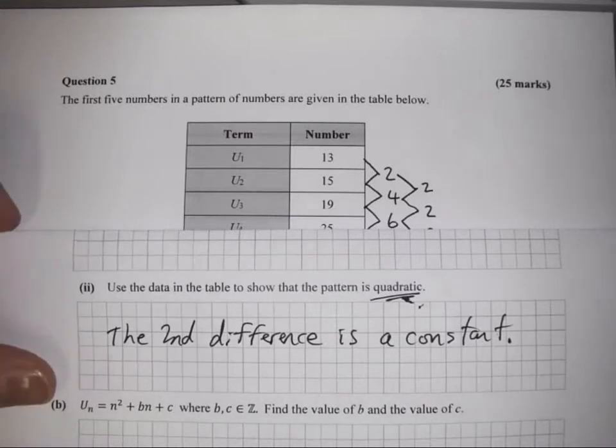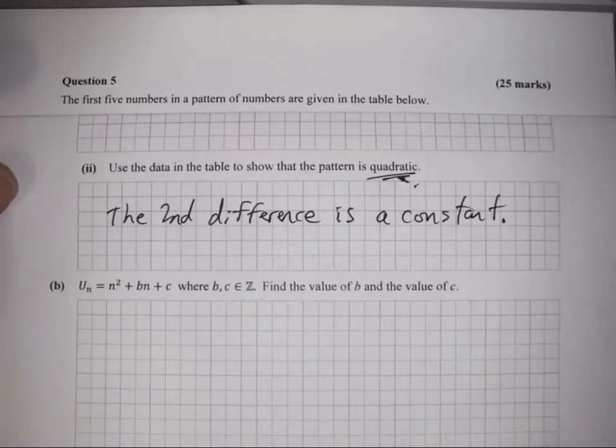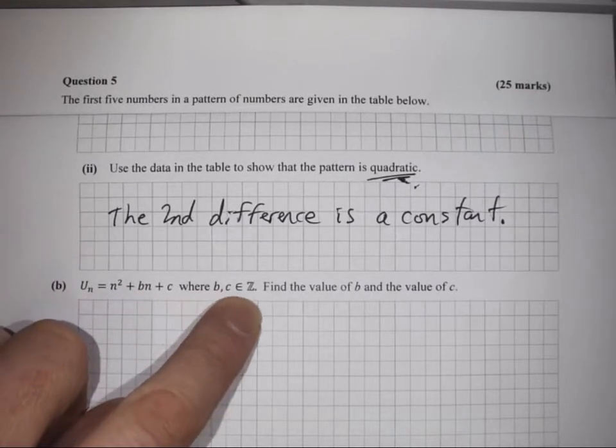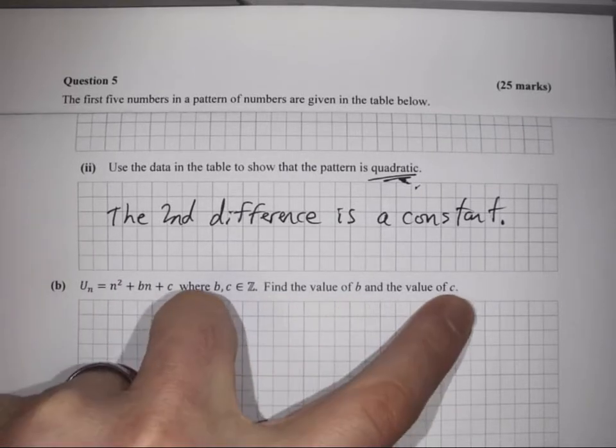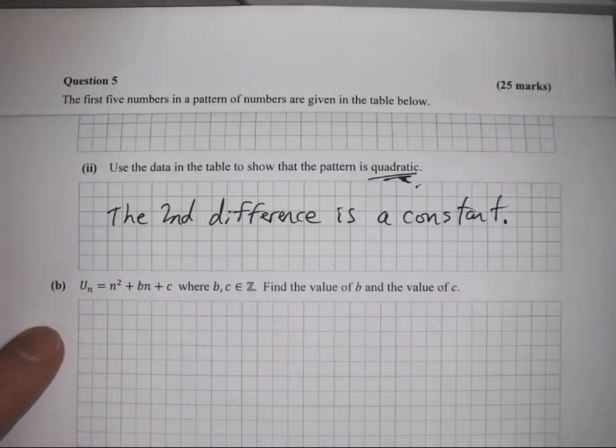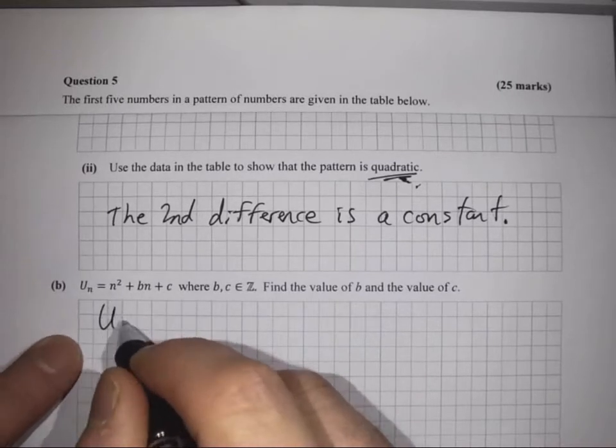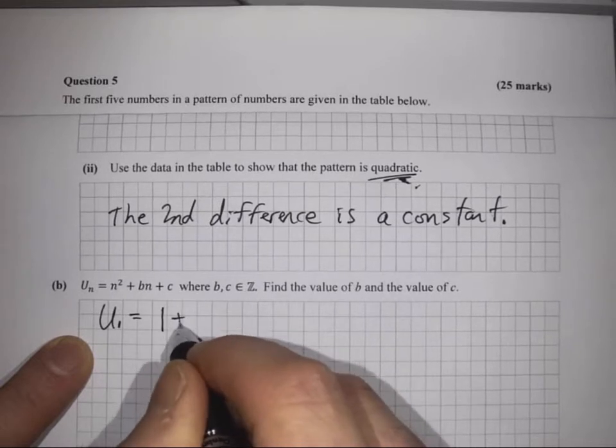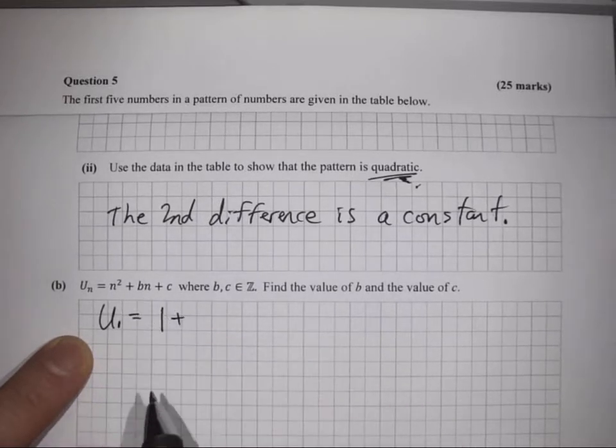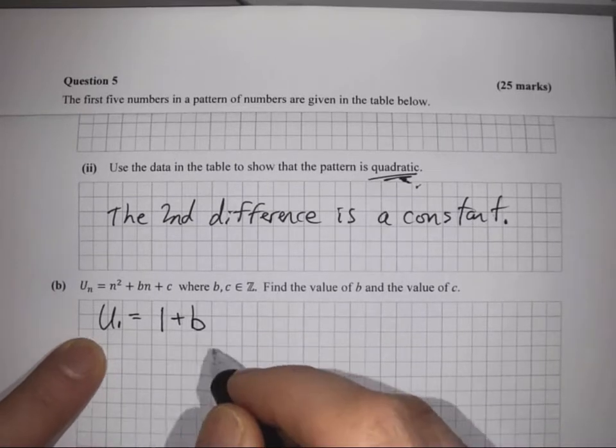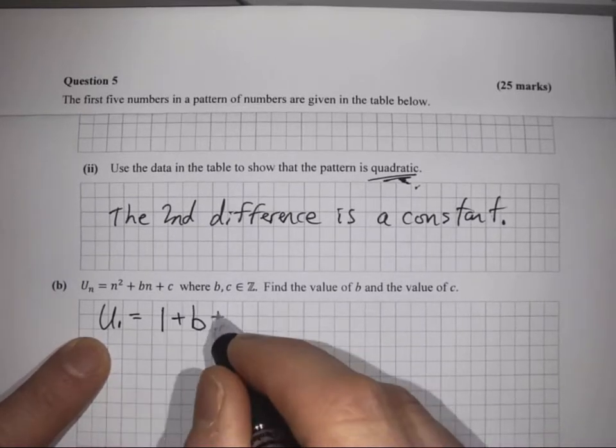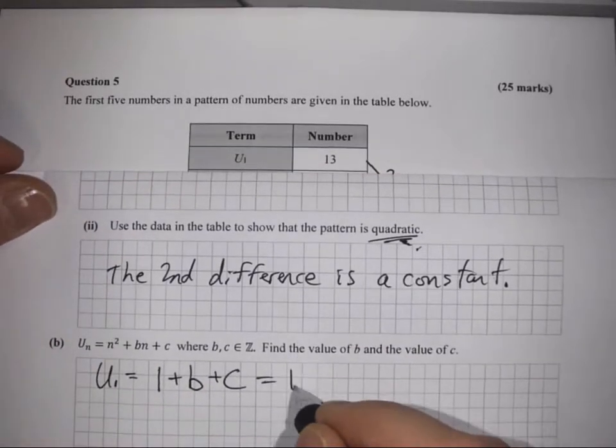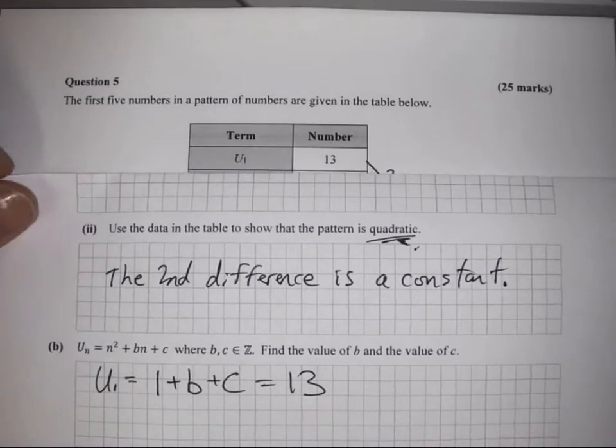In part b, we have U sub n equals n squared plus bn plus c, where b and c are integers. Find the value of b and c. Looking above, when n is 1, U₁ equals 1 squared, which is 1, plus b times 1, which is just b, plus c. So U₁ equals 1 plus b plus c, and the value given above was 13.